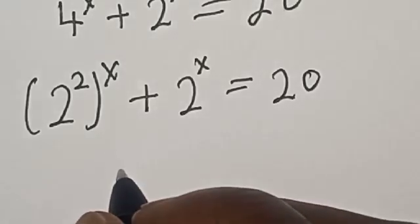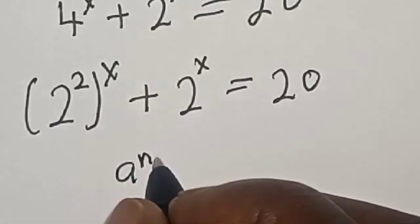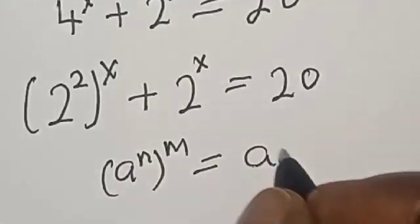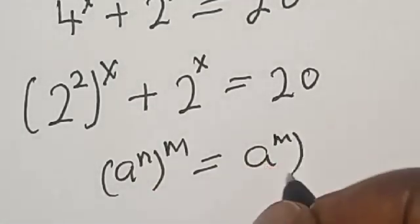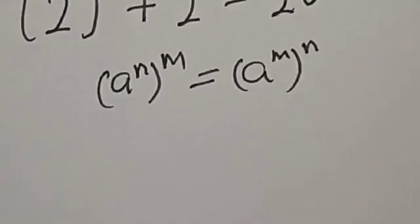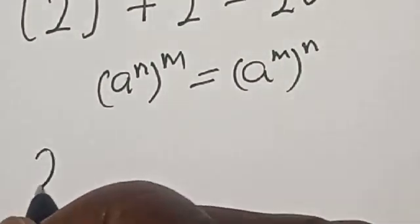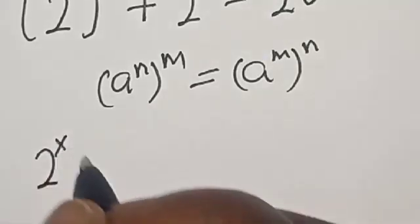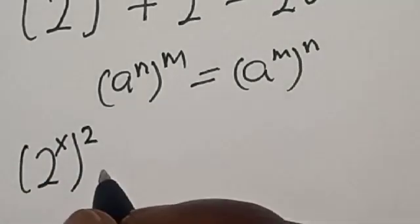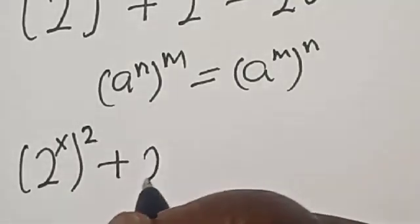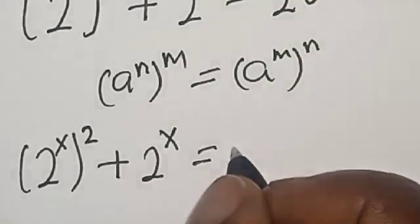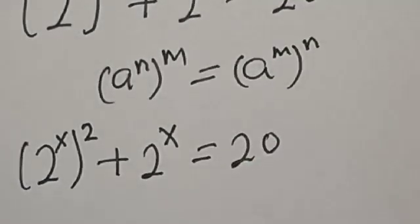Remember this: a raised to power n, raised to power m, is equal to a raised to power m raised to power n. Now 2 raised to power s, squared, plus 2 raised to power s, is equal to 20.